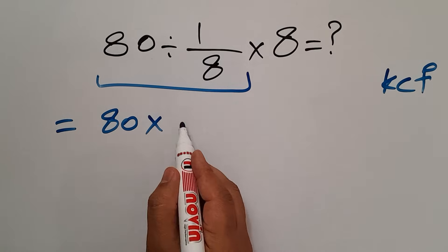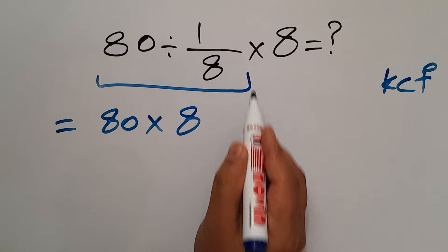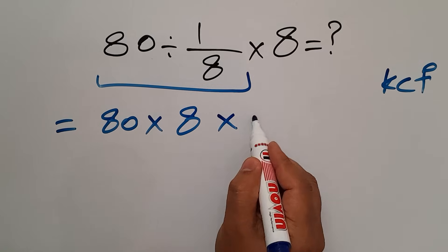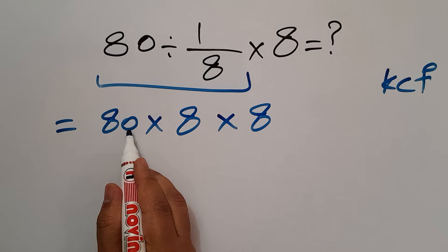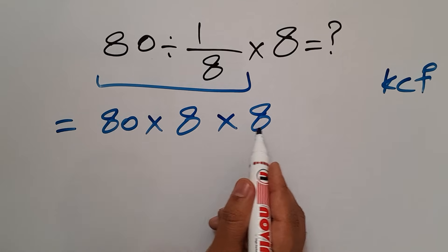Flip the second fraction to 8 and let's recopy times 8. So we have just 80 times 8 times 8.